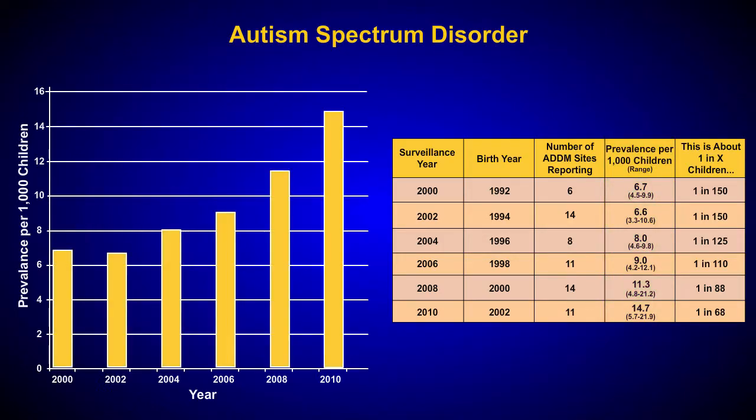Each year has a bar drawn to display the number of children with ASD. For example, in 2002, for every 1,000 children, 6.6 had ASD.